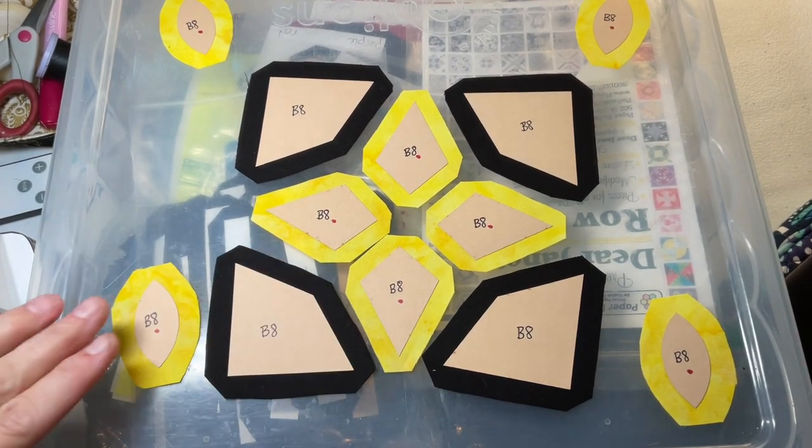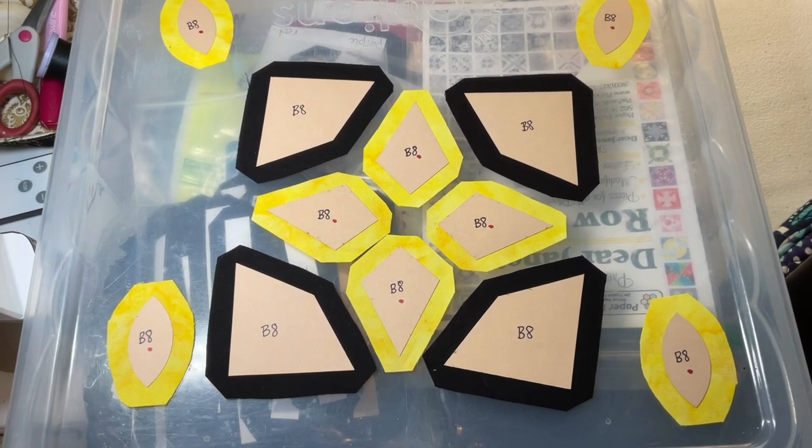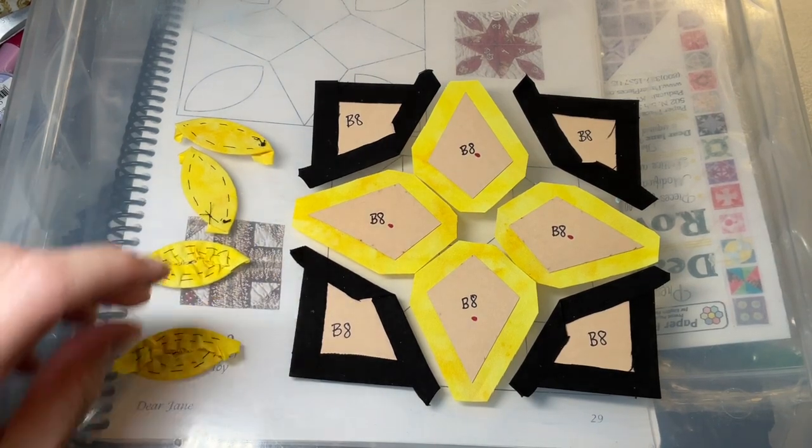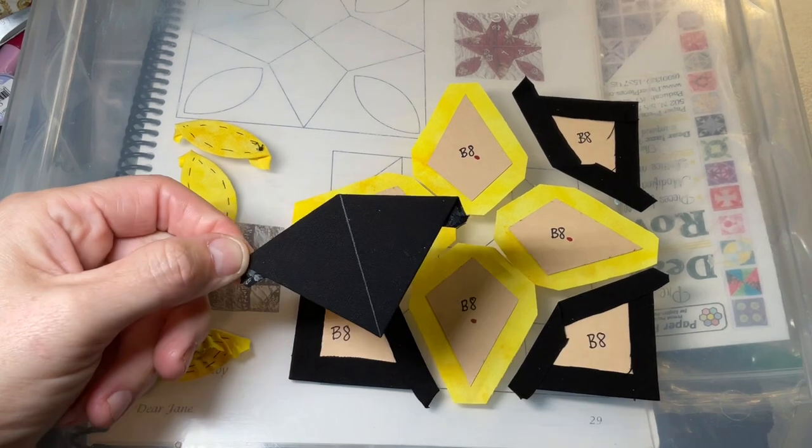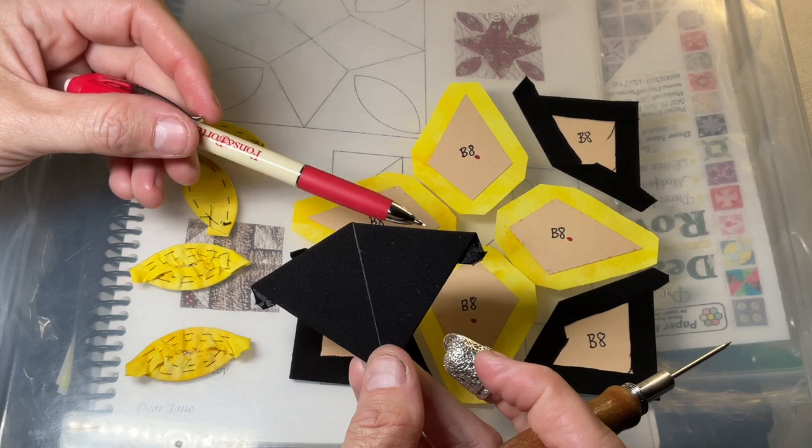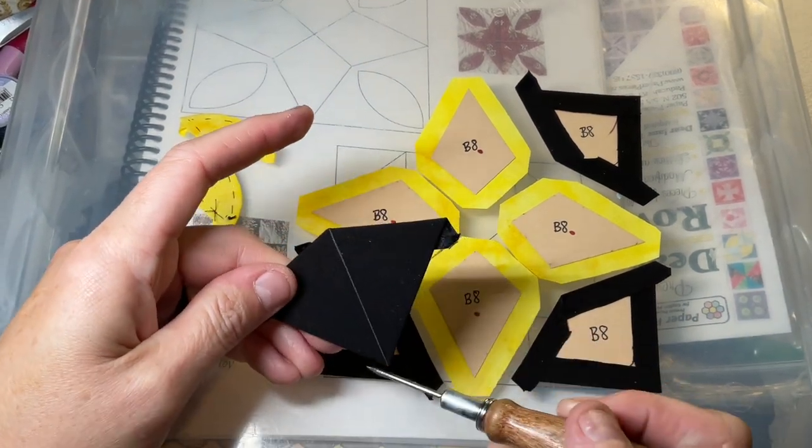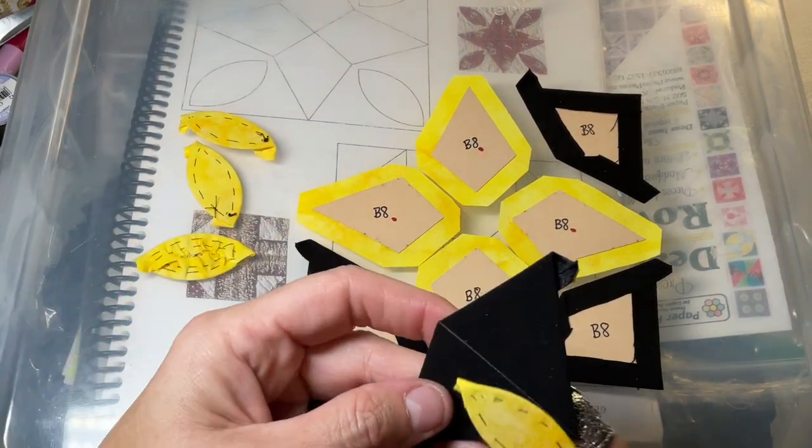I'll go ahead and baste these black pieces and baste all of the footballs and then I can get to applique. So I've got my footballs basted and I've basted my black pieces. I've also taken a white mechanical pencil and made a very faint line. I made a very faint line from point to point. So I have a line to put the applique pieces on.